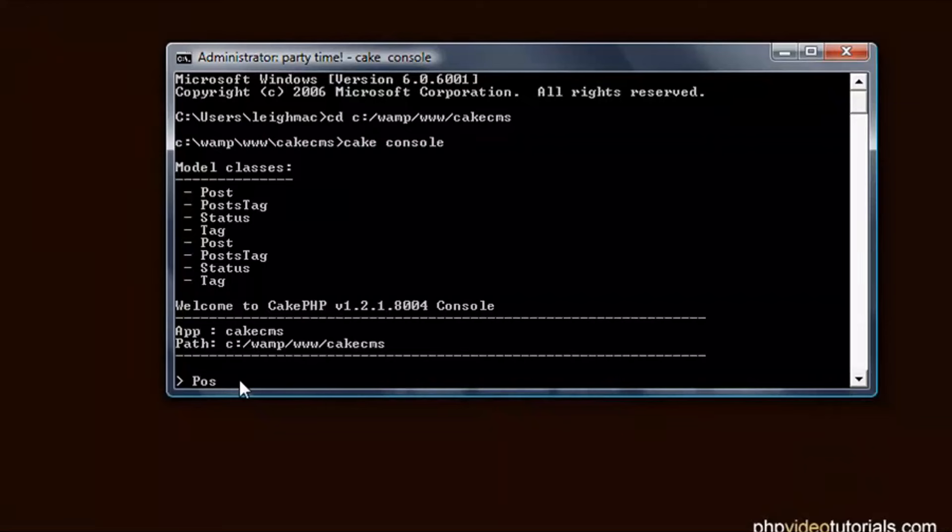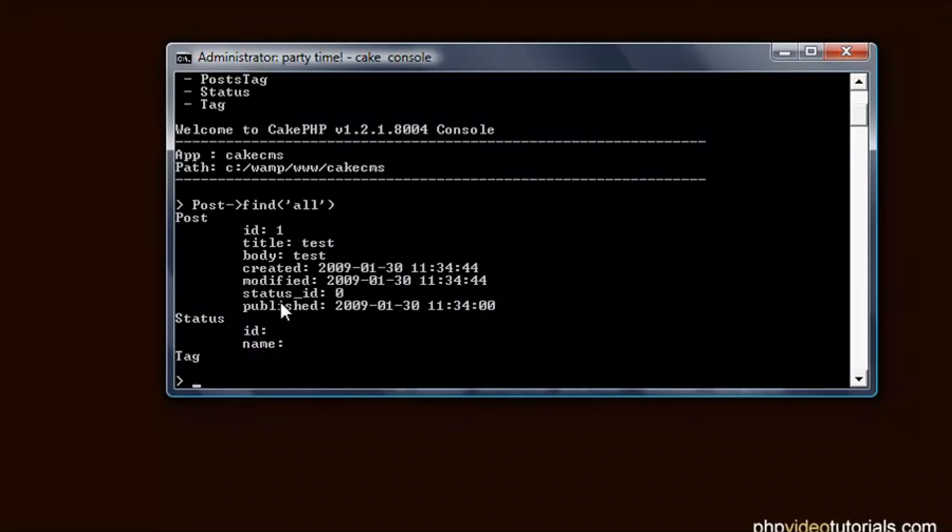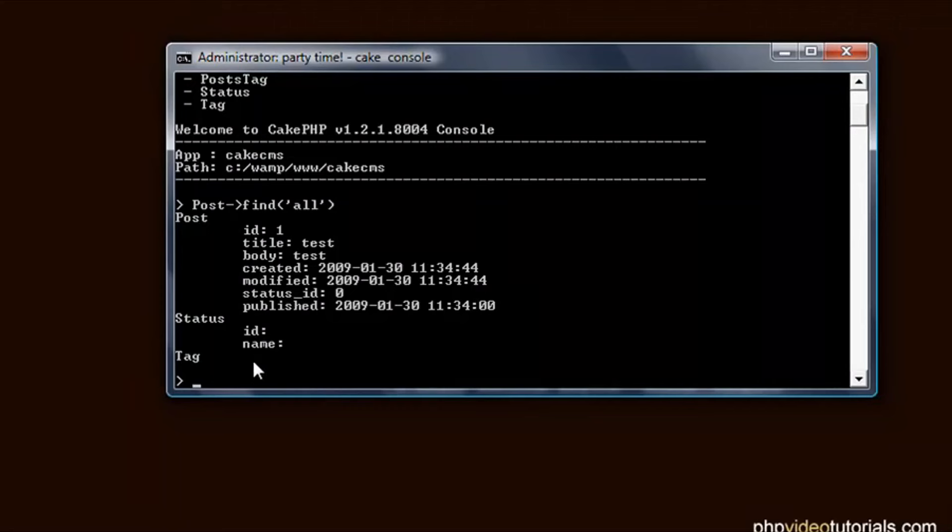So we can do that. So we just want to find all the rows in the posts table. So we can say find, and of course, in here, we have to say all, we're going to find all and we hit enter. So we've only got one in there at the moment. If you don't have any records in there right now, you will have in a minute. We'll add in another one now.